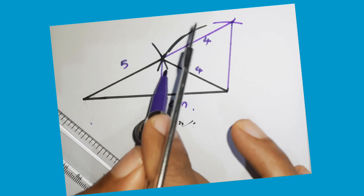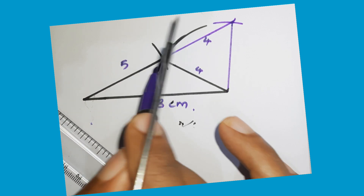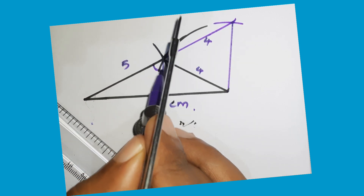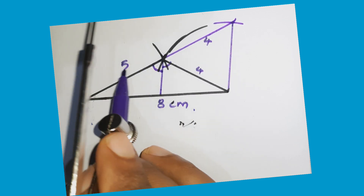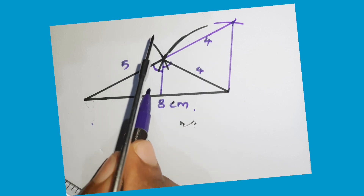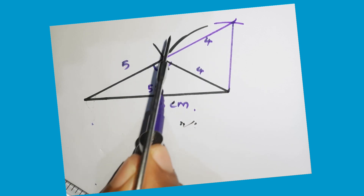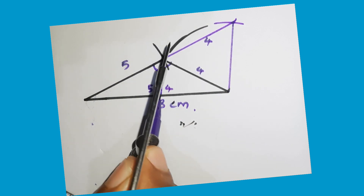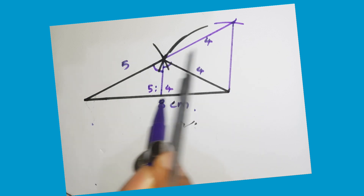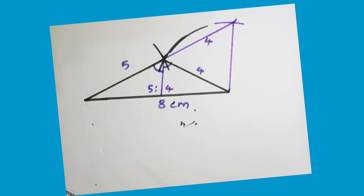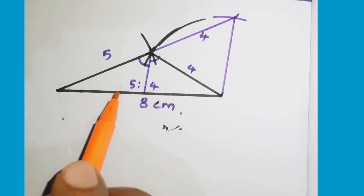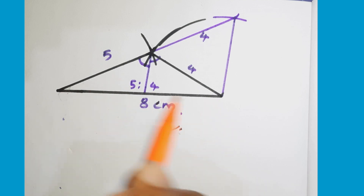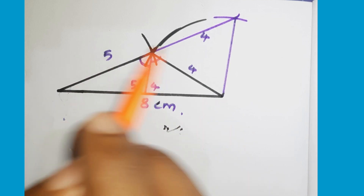If you would like to show the angle bisector, the angle is to bend. 5 is to 4. This is the 5 part and this is the 4 part. This is the same concept that we use in the same way.